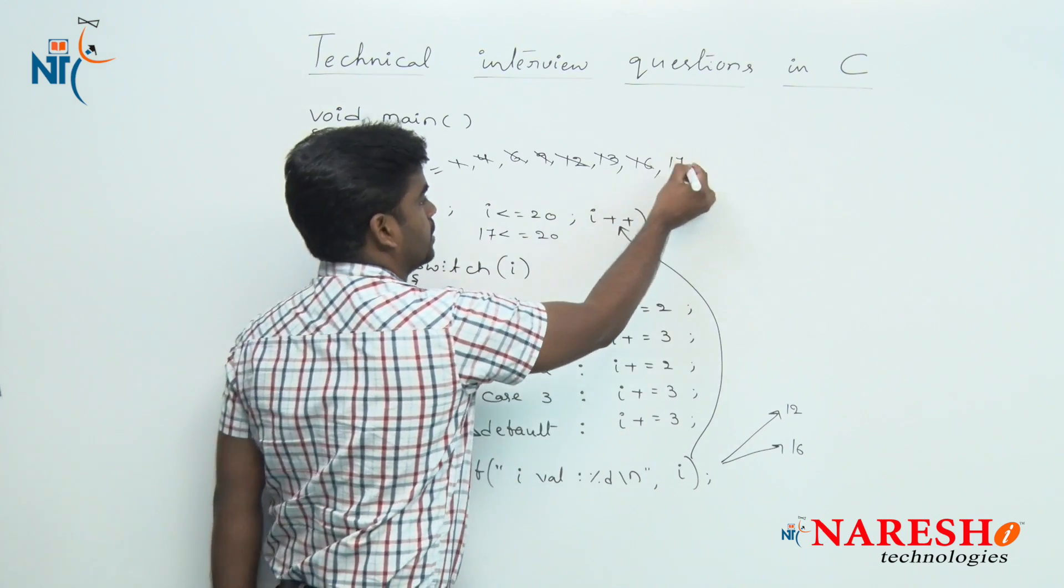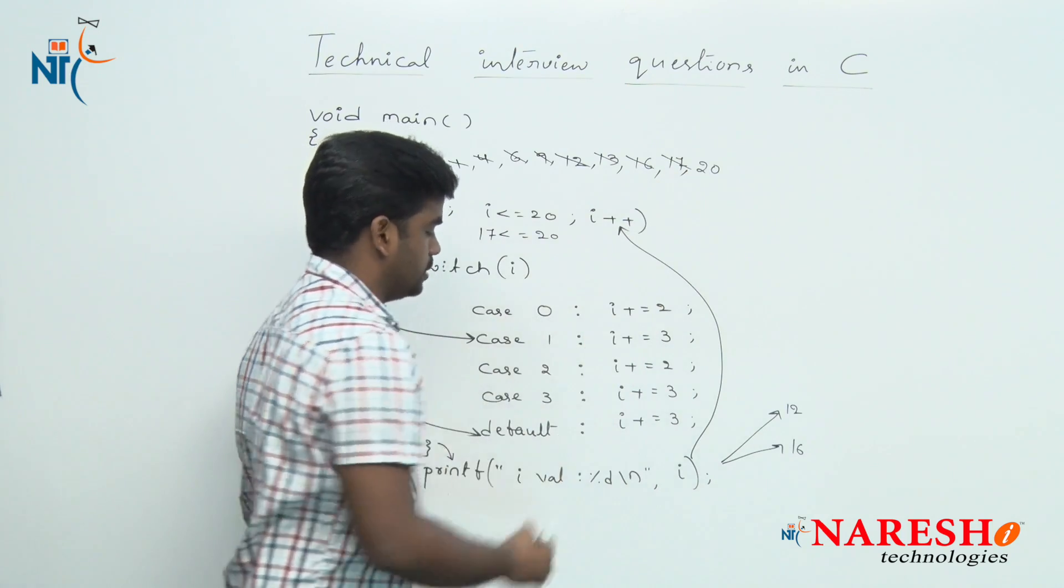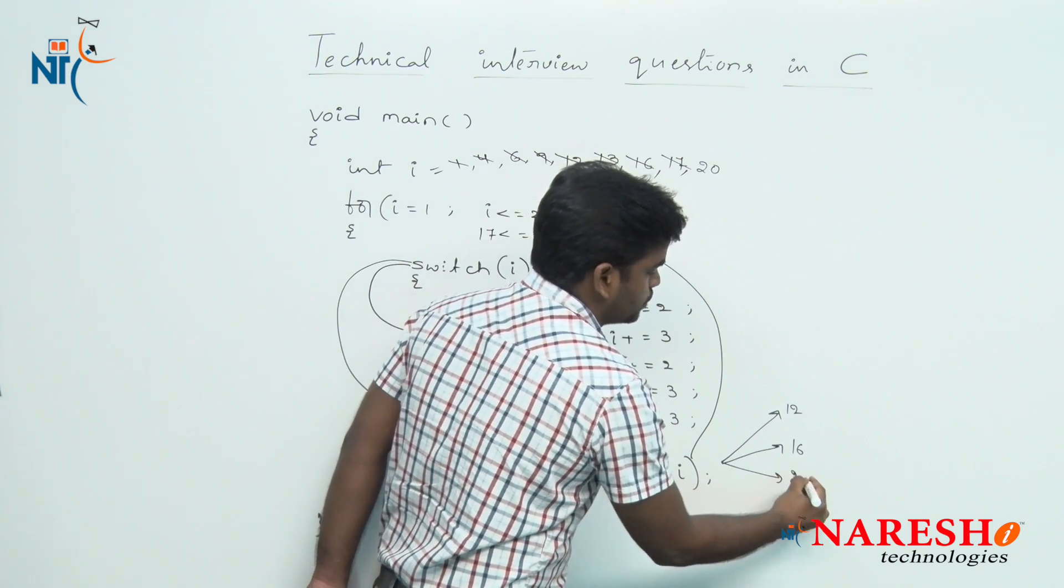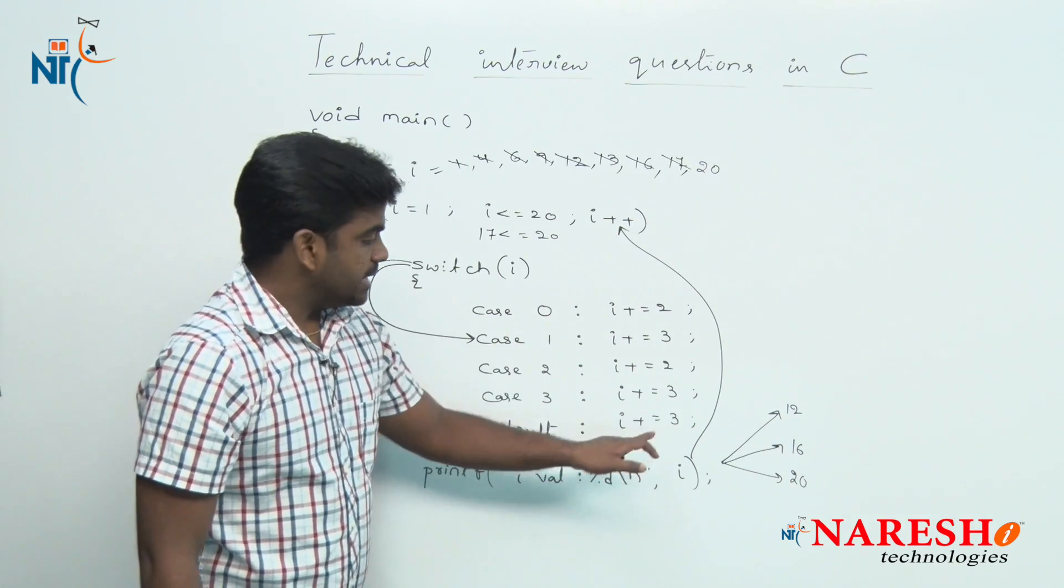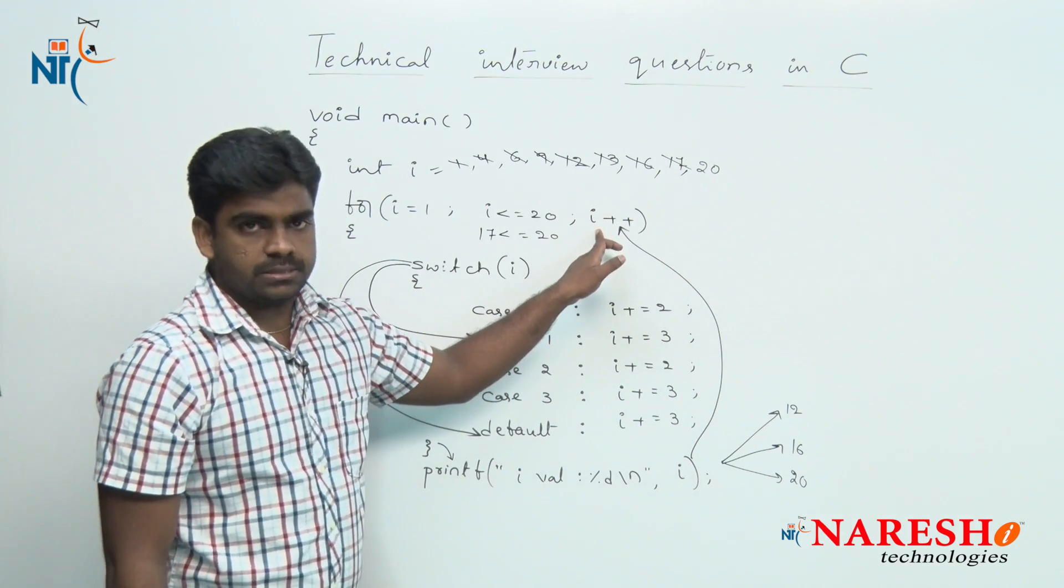Here i value it will print is 20. Next again it will repeat the loop, i plus plus, i value becomes 21.